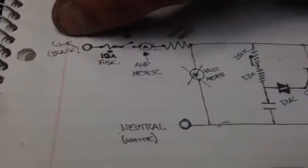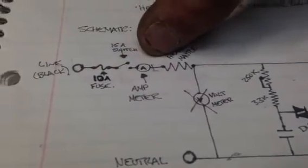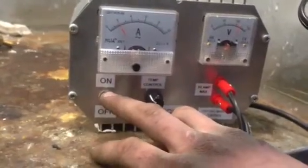You got your black wire comes in goes through a fuse, goes through a switch, and goes through the amp meter. So that's basically the black wire comes in goes through the switch, goes through the fuse, and then through the amp meter.